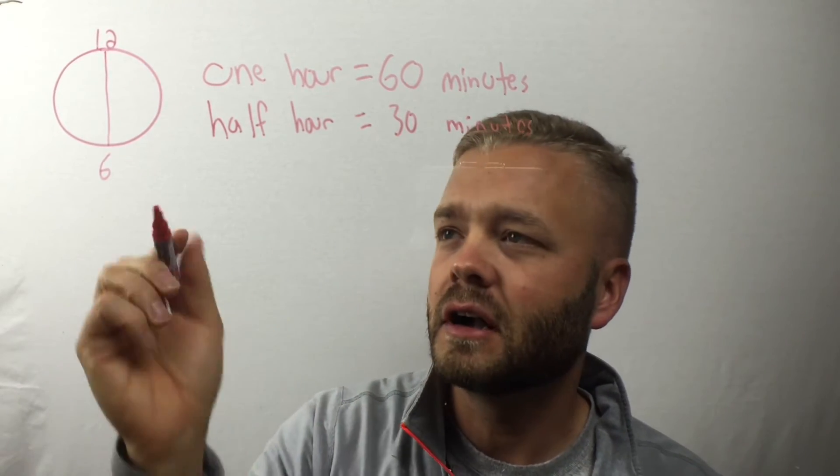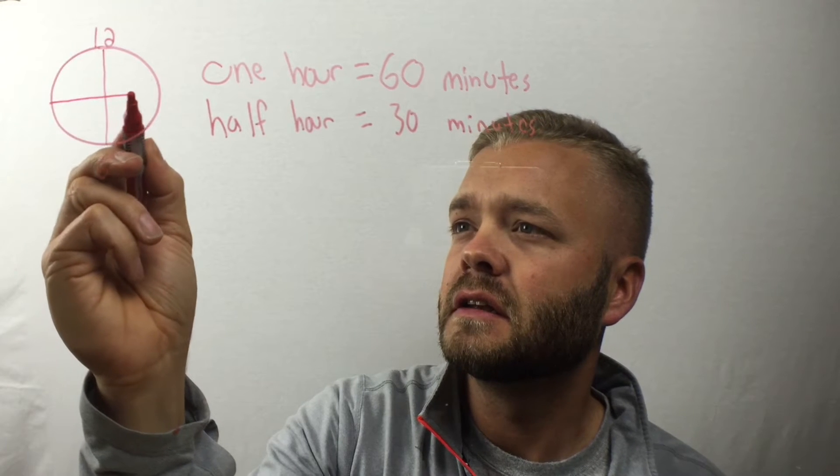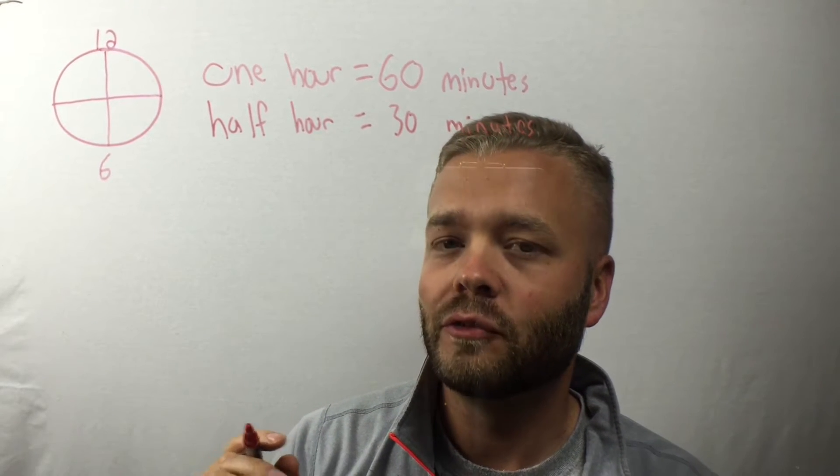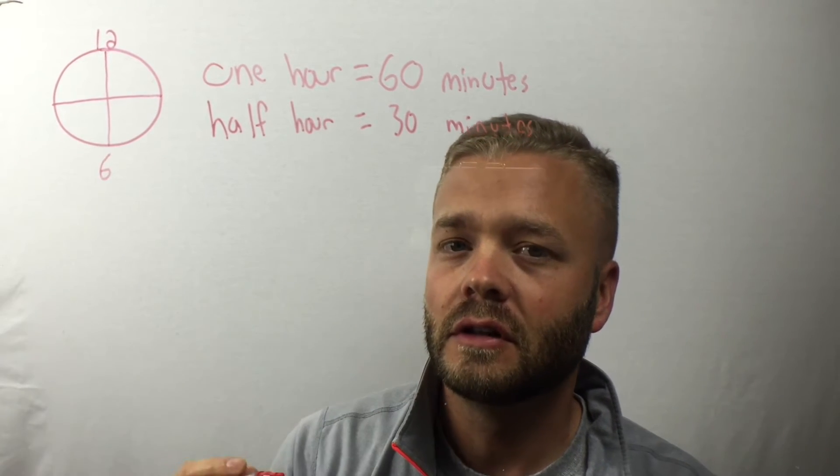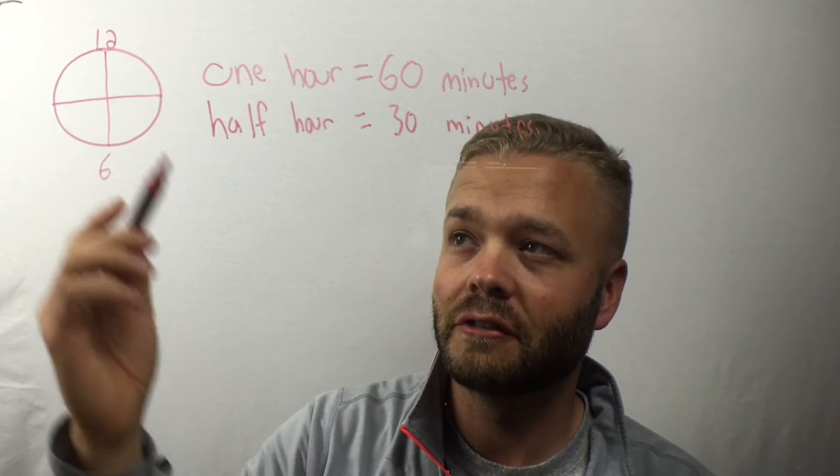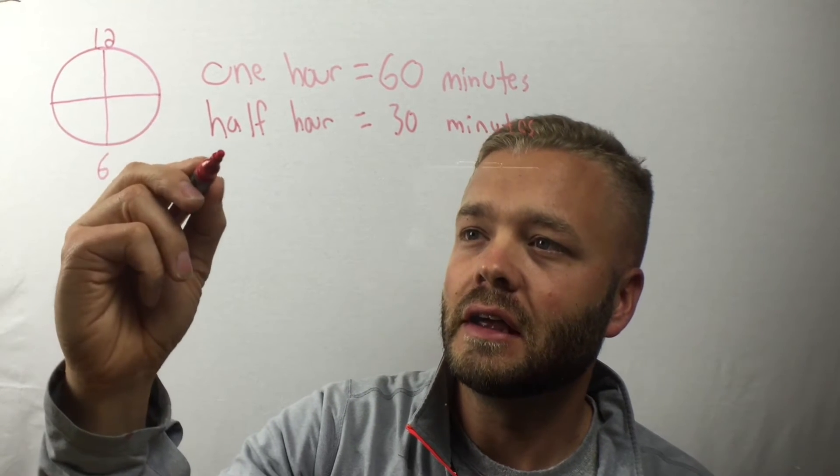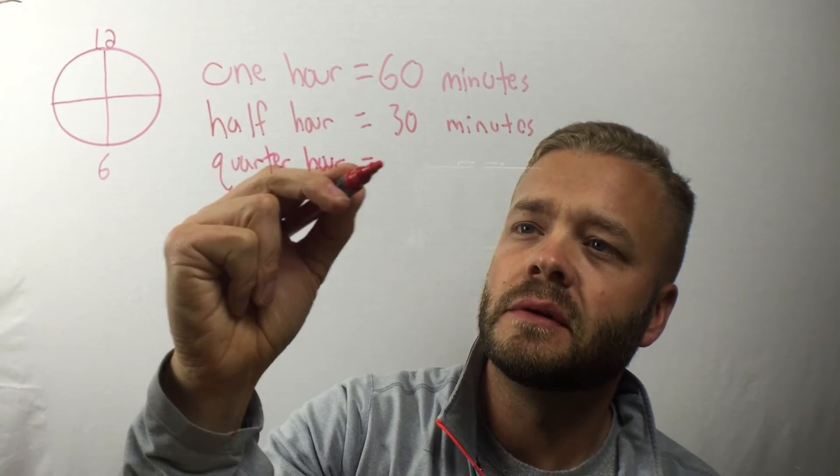Let's take the same clock now and cut it again. We now have four pieces, four fourths. This is one fourth, another fourth, another fourth, and another fourth. Also known as quarters. We have four quarters. A quarter hour is 15 minutes.